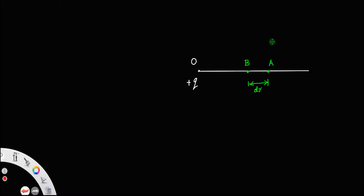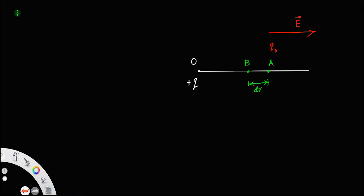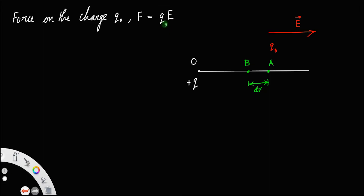Suppose you have a charge Q0 placed at the point A. Since the charge is positive, there is always an electric field towards the right — for a positive charge, the electric field is directed away from the charge. The force on the charge Q0 due to the plus Q charge is F equal to Q0 times E. Taking only the magnitude, F equals Q0·E. Let us call this equation number 1.